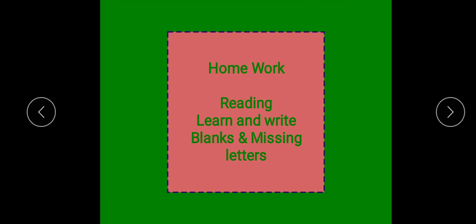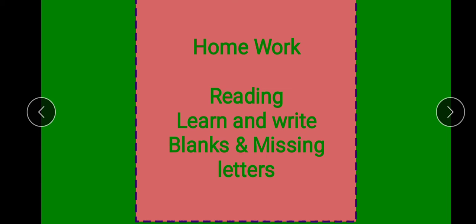Phir ye thi reading, hamne just next chapter ki reading ki hain. To aapka homework kya hai, ki aapne, ye jo solar system ki ek page ki hamne reading ki hain, iski again reading karni hain aapne, aur ye blanks aur missing letters jo hain, inko aapne apne register number one pe write karna hai, aur isko learn bhi karna hai.